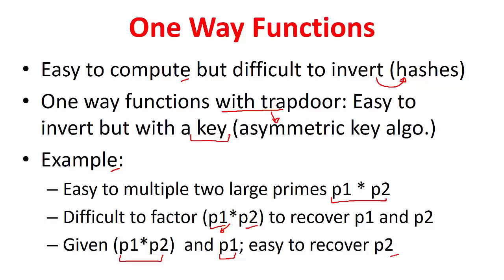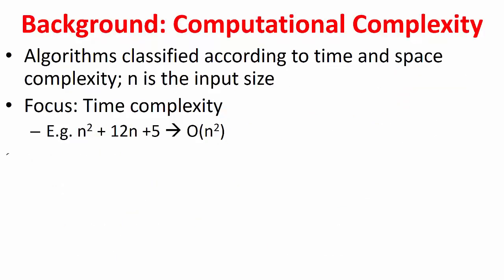This is a simple example but things are more complex in real life, so let us dig in a little more. For this we need to understand computational complexity. We typically classify algorithms based on time and space complexity. Focusing on time complexity: if n is the input to the algorithm and it takes a certain time to finish, we say the time complexity is O(n²), for example.